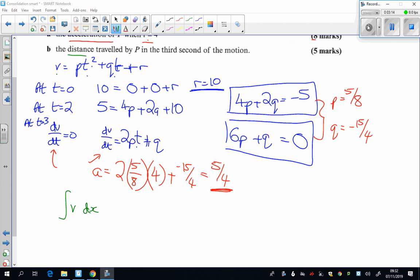Now, if it says, how far does it go in the first three seconds, we'd be going from zero all the way up to three. It doesn't ask that. It asks just in the third second of the motion. So we want to know how far does it go between the second and the third second. So I'm going the integral from 2 to 3 of this thing.